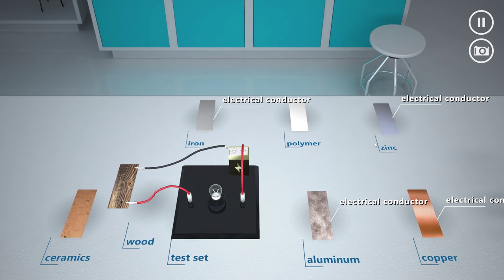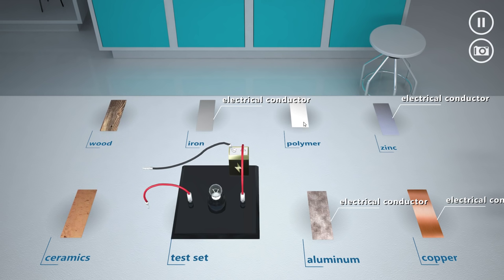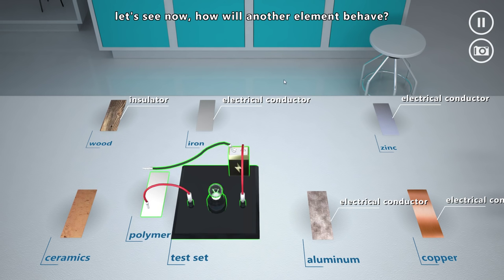Wood is a typical non-metal. It does not conduct electricity. The light bulb will not lit. Let's see now. How will another element behave?